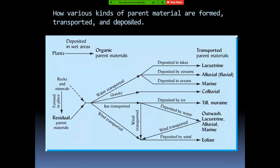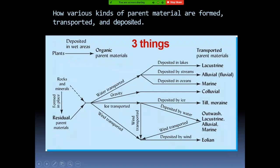If we talk about the formation of soil from parent material, we have to bear in mind three things. Number one is the material by which the soil is formed and the place of formation. Secondly, the means of transportation — or how the soil was transported. And finally, the place of deposition — where the soil is deposited.